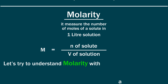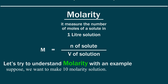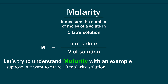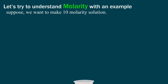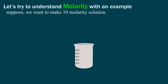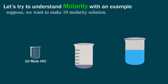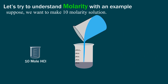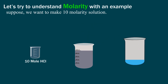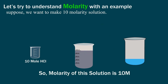Let's try to understand molarity with an example. Suppose we want to make a 10 molarity solution of HCl. Firstly, take a 1 liter empty beaker and add 10 moles of HCl to it. Then take distilled water and fill it slowly up to the 1 liter mark. As we know, we have added 10 moles of solute, thus the molarity of this solution is 10 M.